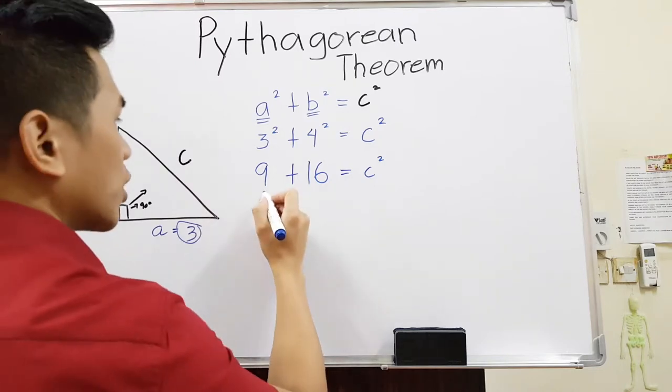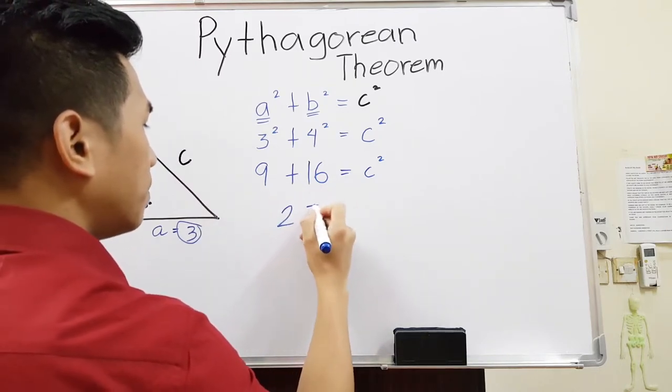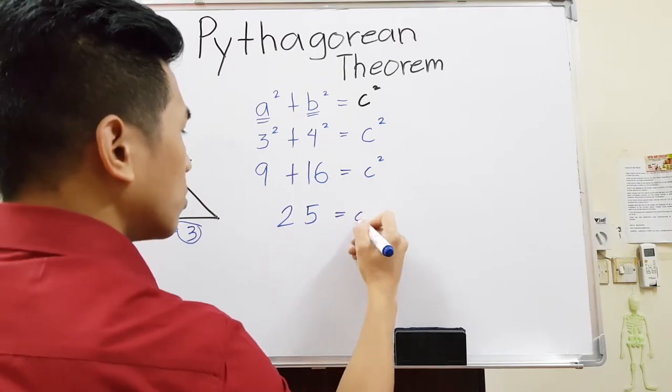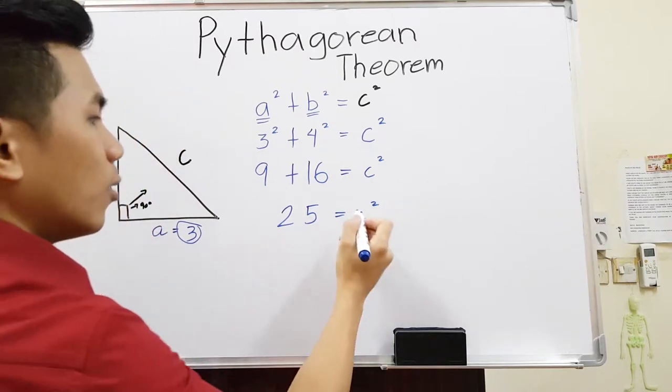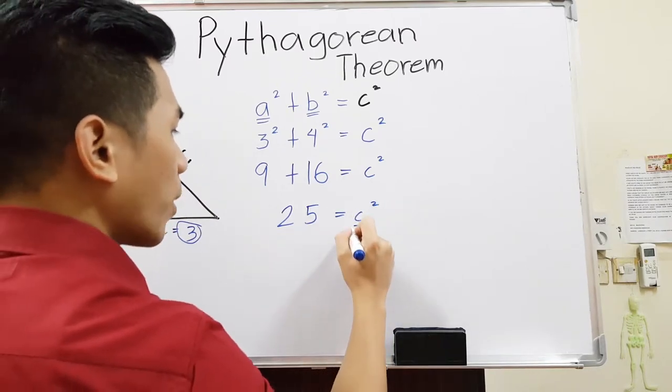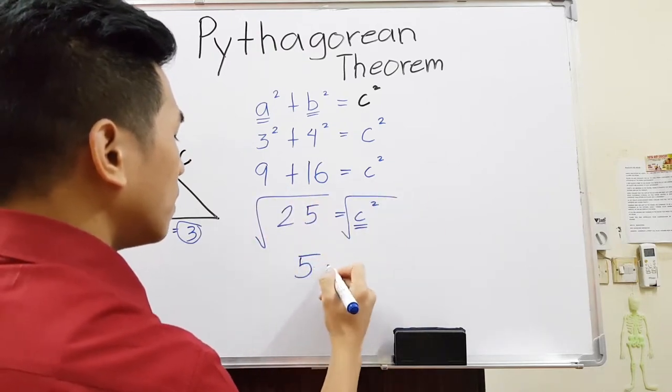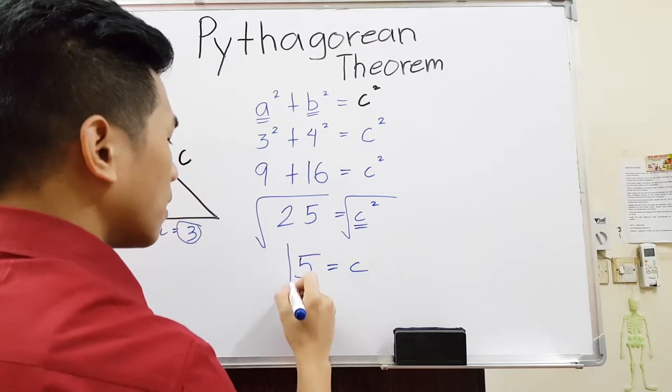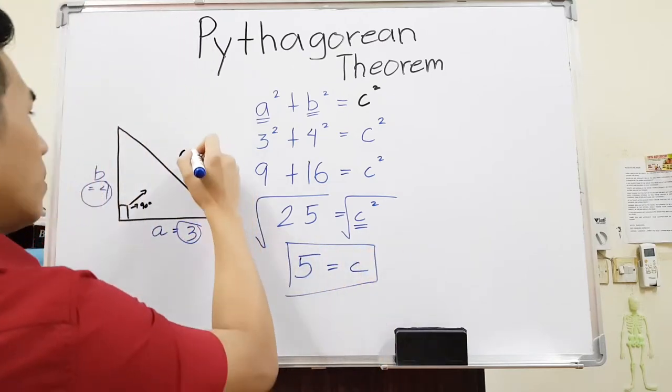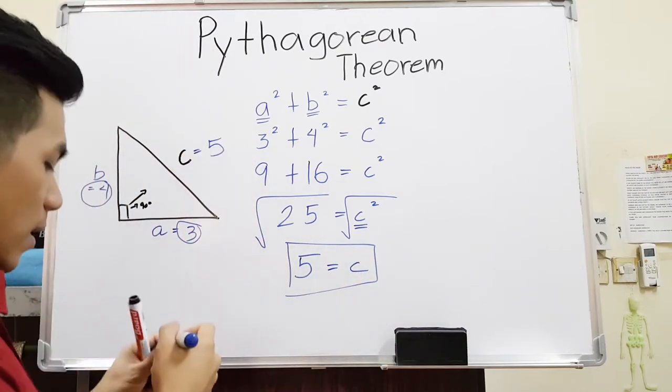Now just simplify this side. 9 plus 16, which is 25, equals C squared. We need C only, so we have to square root both sides. That will be 5 equals our C. Therefore, this will be 5. As simple as that.